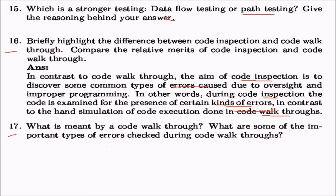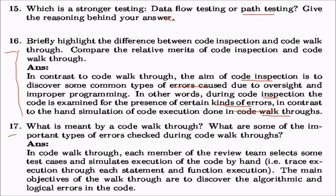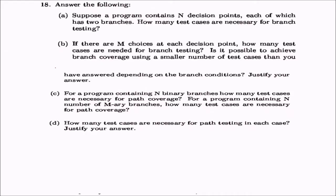What is code walkthrough and what errors does it check? In code walkthrough, each member of a review team selects some test cases and simulates execution of the code by hand, tracing through each statement and function. The main objective is to discover algorithm and logical errors. During code inspection, various kinds of errors are examined; when people trace the code on paper, algorithmic and logic errors tend to surface.